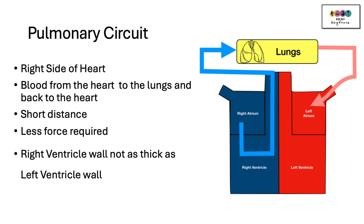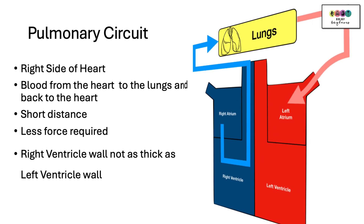The other circuit is the pulmonary circuit. Blood from the right side of the heart is pumped from the right ventricle to the lungs and back to the heart again — a very short distance, much less than the systemic. Less force is required because the blood doesn't have to be pushed that greater distance. That's the reason why the right ventricle wall is not as thick as the left.